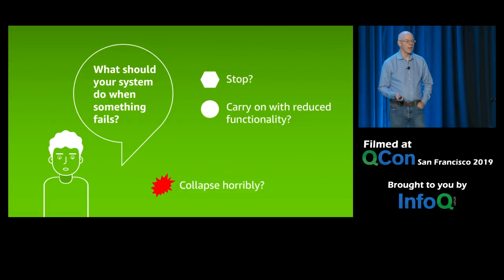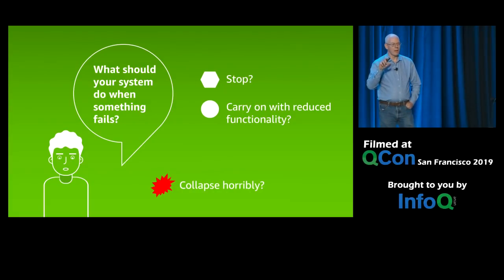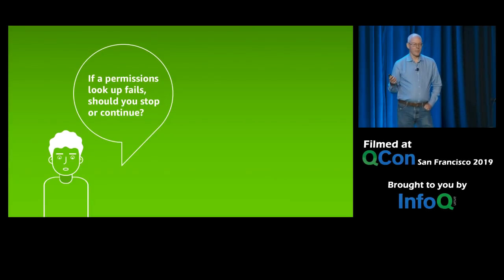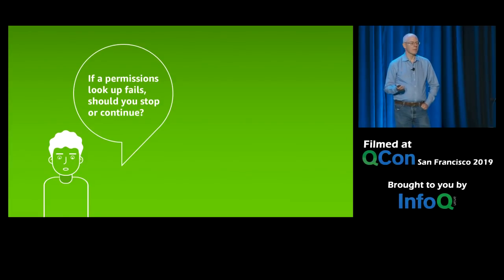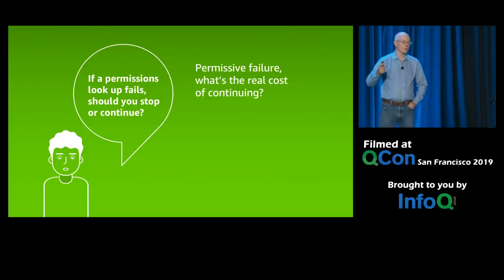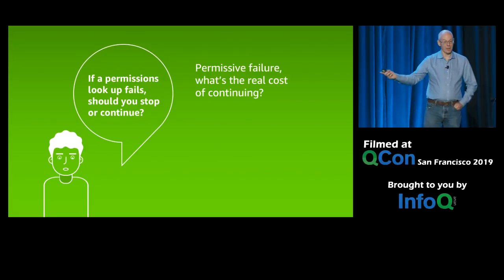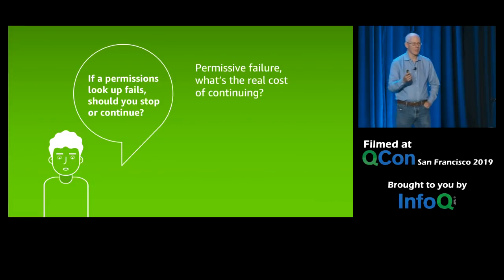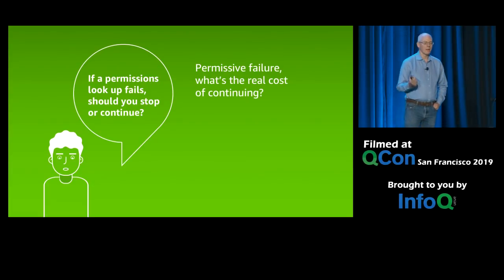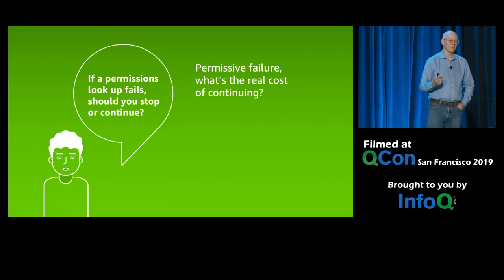We've seen airports and airlines go down because of a single router or power supply failure, or nuclear power station failures. Think about a permissions lookup — a fairly minor thing. You're running through your code and you ask whether this customer should be allowed to do something, and you get an exception back because the subscriber service is down. Should you stop or continue? Well, it depends on what you're about to do. Are you about to move a billion dollars from one bank account to another, or are you about to show somebody a movie? If you can show someone a movie, just keep going — we trained most of the Netflix engineers to do permissive failure, because the cost of showing a movie if you weren't sure someone was a subscriber was negligible. But in banking, you stop.